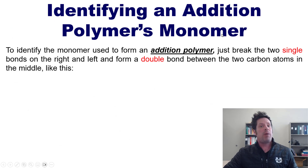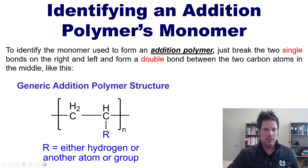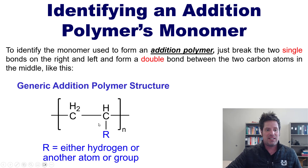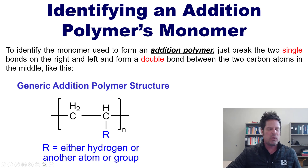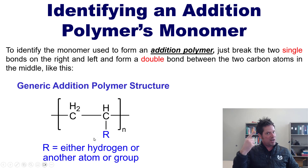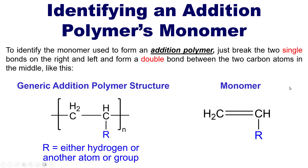To identify an addition polymer's monomer, all you do is take the structure of the polymer, throw away the two brackets and the letter n, and put a double bond between the two carbons. The letter n represents some unspecified number of repeating units, and the letter R represents either a hydrocarbon or some other atom or group that varies from polymer to polymer. So if given this structure and asked for the monomer, just remove the brackets and n, erase the single bonds on each side of the repeating unit, and place a double bond between the two carbons.